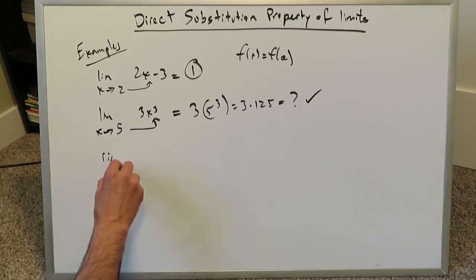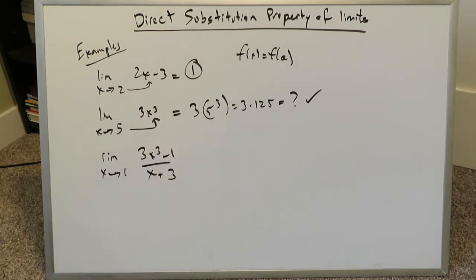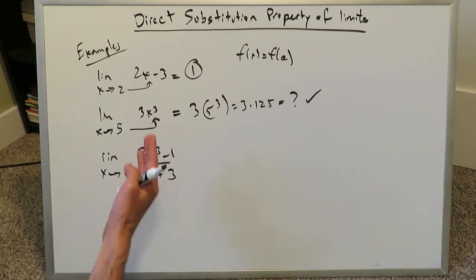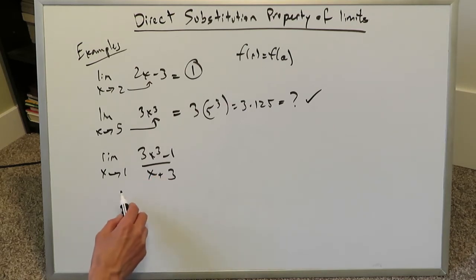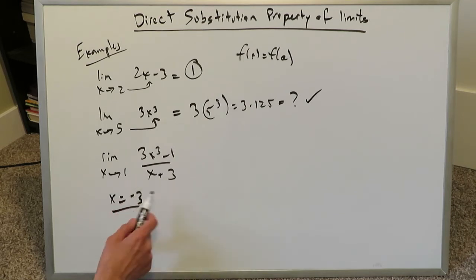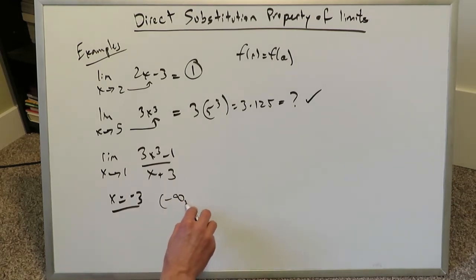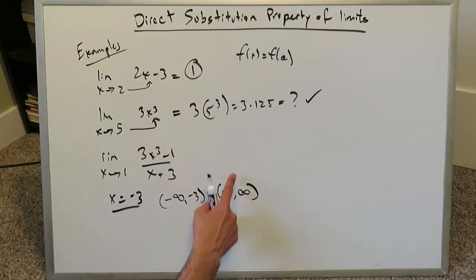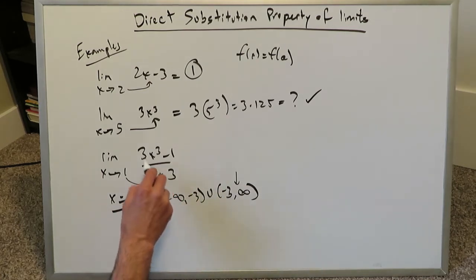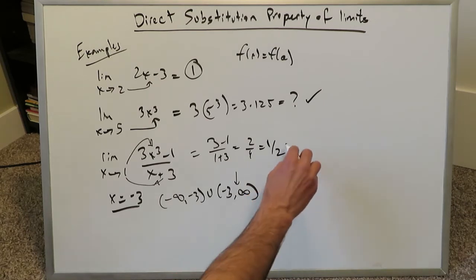What about rational functions? Limit as x approaches 1, with the function (3x cubed minus 1) over (x plus 3). For a rational function you have to examine vertical asymptotes. Here the domain excludes x equals negative 3, because that would give a zero in the denominator. But 1 does not nullify the function — the domain is negative infinity to negative 3 union negative 3 to positive infinity, and 1 falls well within that. Substituting 1 gives (3 minus 1) over (1 plus 3), which is 2 over 4, giving a limit of 1 over 2.